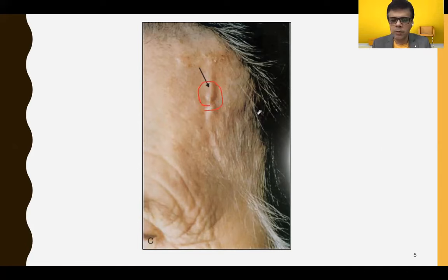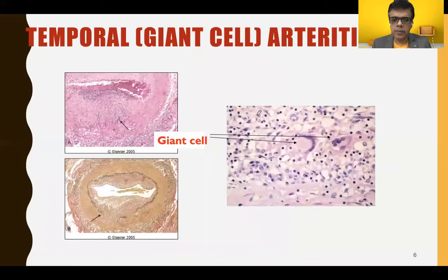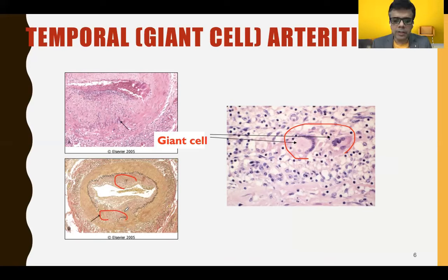The nodular thickening is the most common feature by which this vasculitis is identified clinically. On microscopy, multinucleated giant cells are clearly seen, along with tunica intimal thickening and fragmented elastic lamina, demonstrated by special elastic tissue stains like van Gieson stain.